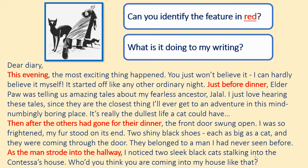Here is my diary entry and I have identified another feature — I've identified it in red. This is a feature we've learned about before so I'm pretty sure you'll all know what it is. What is the feature and what is it doing to my writing? How is it improving my writing?